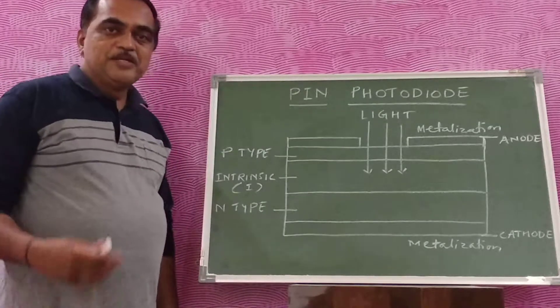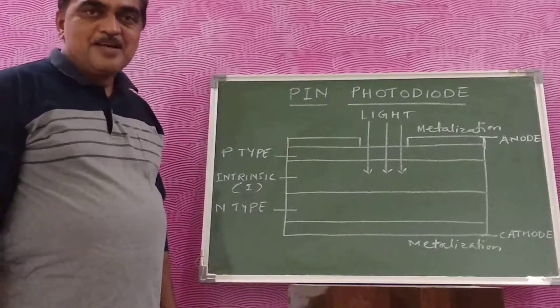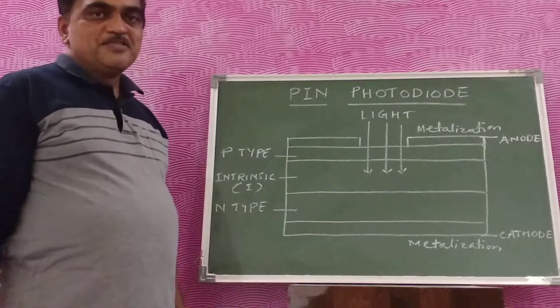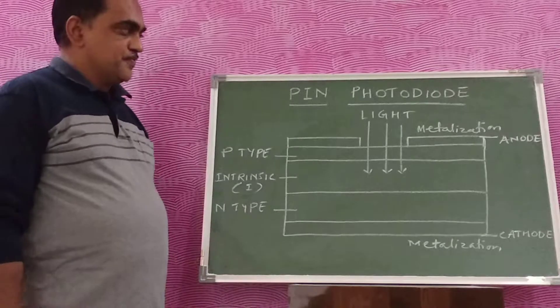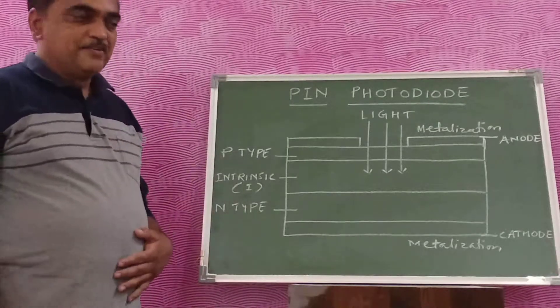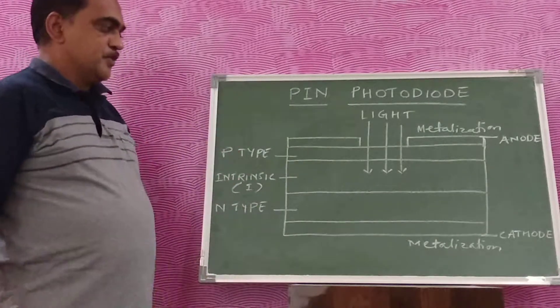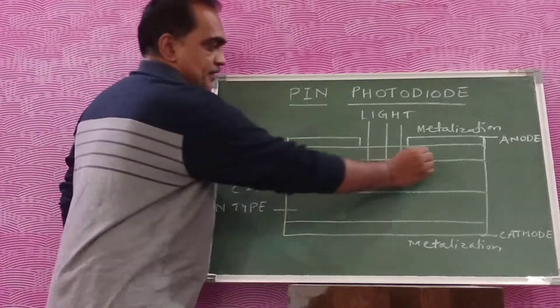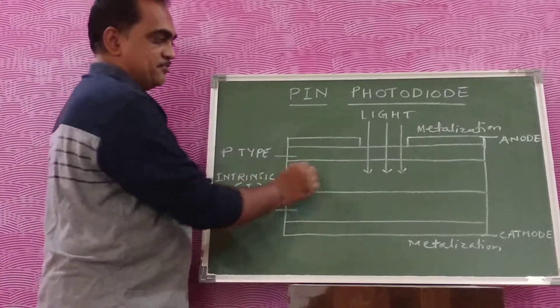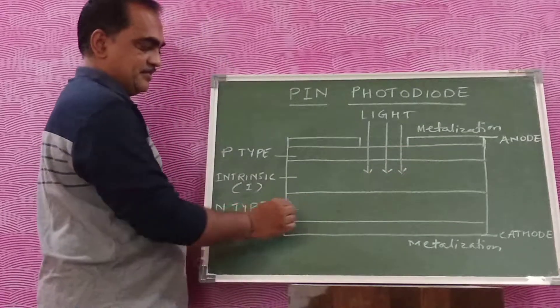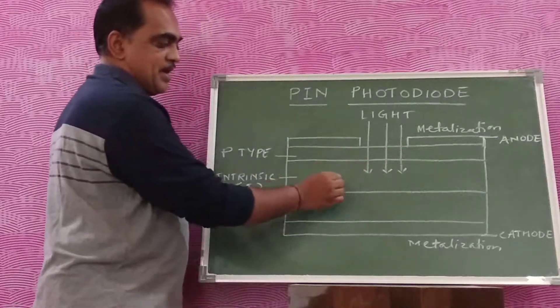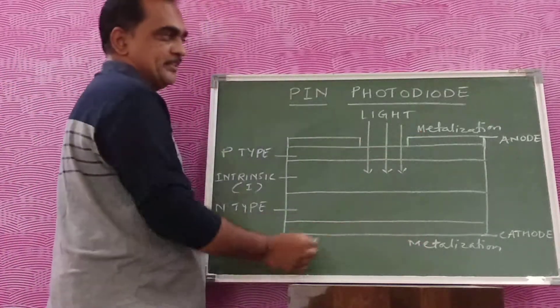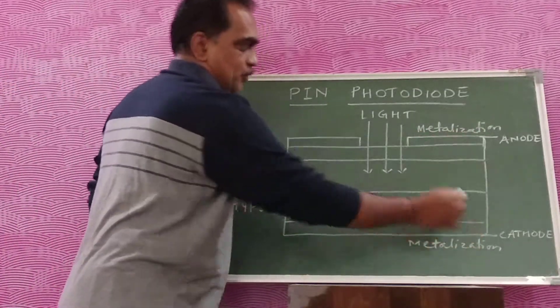PIN: P means the P-type material of semiconductor, I means the intrinsic pure semiconductor, and N means the N-type material of semiconductor. Using PIN, we have built a structure. In this structure, you can see the P-type material, the intrinsic layer, and the N-type material. This is a PIN diode upon which we have metallized contacts for anode and cathode.